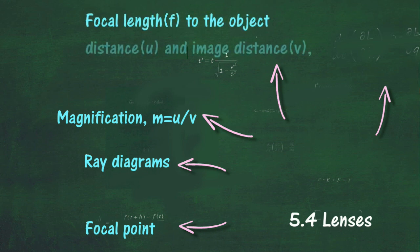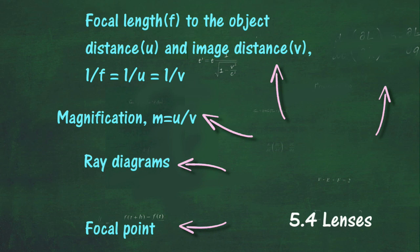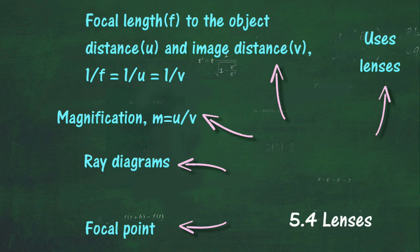Relate focal length f to the object distance u and image distance v, that is, 1/f = 1/u + 1/v. Describe, with the aid of ray diagrams, the use of lenses in optical devices, construct an optical device that uses lenses, and solve problems involving lenses.